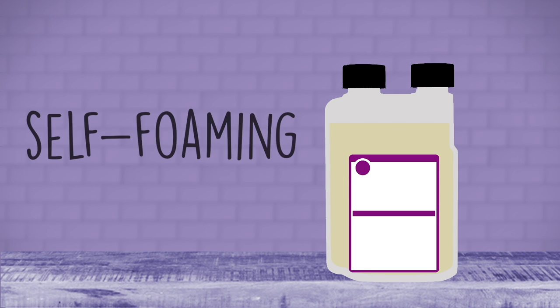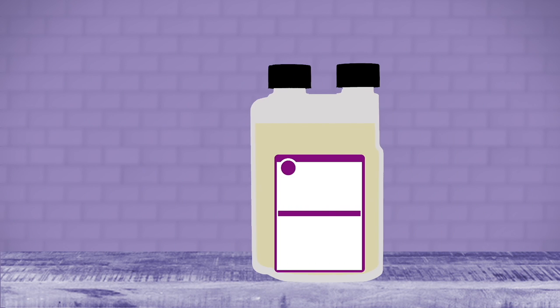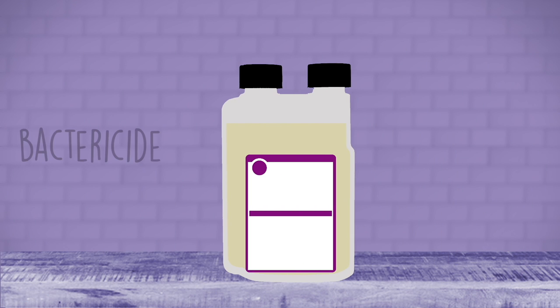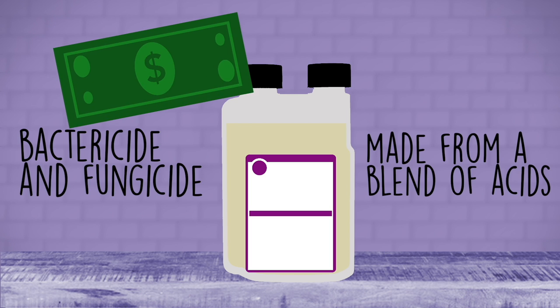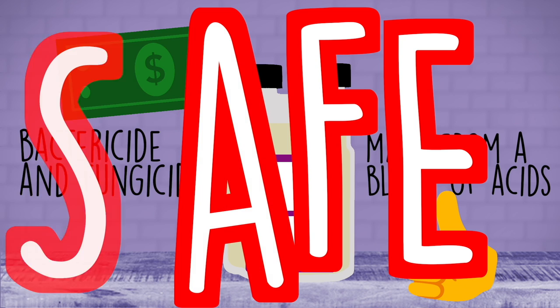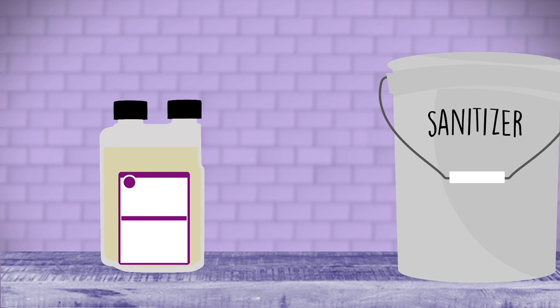Star San. This brings us to acid-based sanitizers like Star San. Star San is a self-foaming acid sanitizer ideal for brewing and other food and beverage equipment. It is an extremely effective bactericide and fungicide made from a blend of acids. It is cheap, effective, and most importantly, safe. Anything that will come in contact with your must should be sanitized to prevent microbial infections that could turn the must into something dangerous or gross.